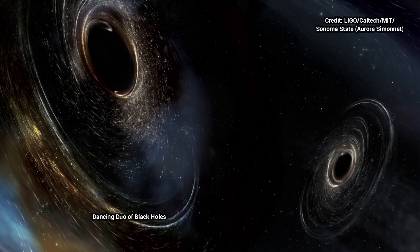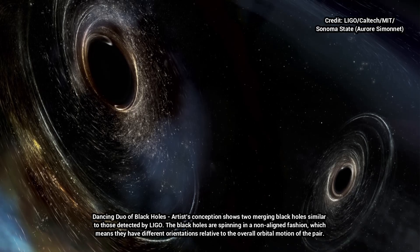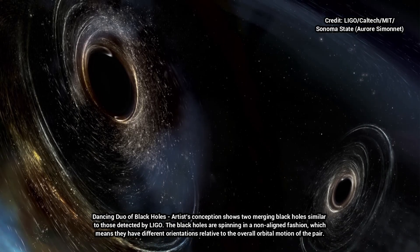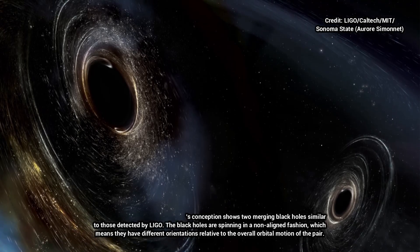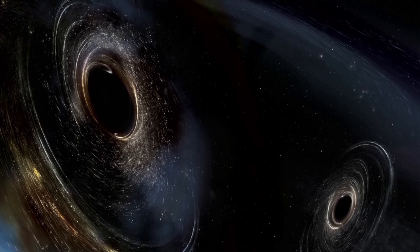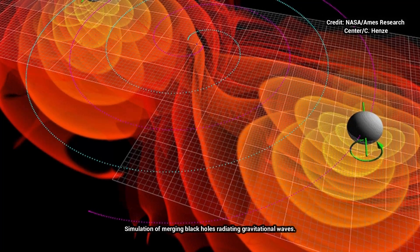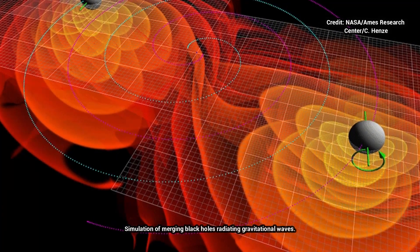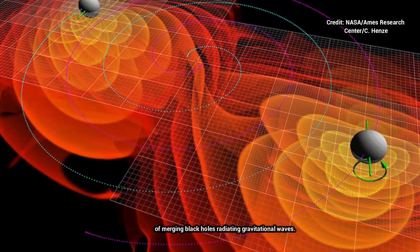LIGO made history in 2015 when it made the first ever direct detection of gravitational waves, 100 years after Einstein first predicted them. Since then, LIGO and its European-based partner observatory, Virgo, have detected nearly 30 gravitational wave events, which are being further analyzed. Many of these gravitational waves arose when two black holes collided, sending quivers through space.